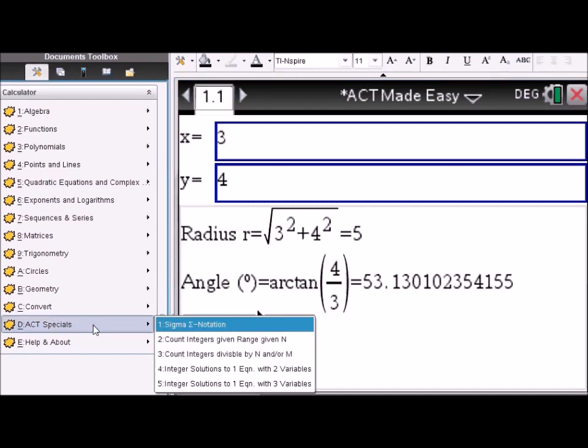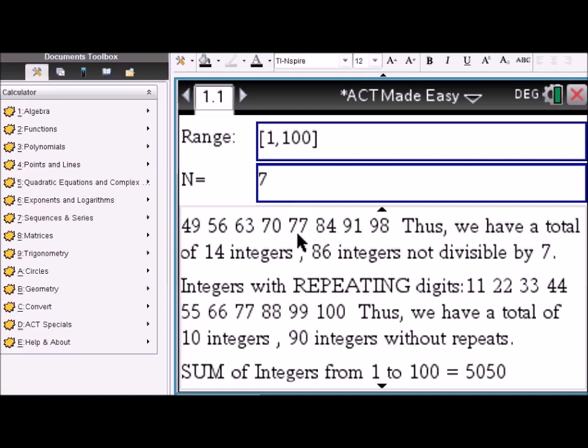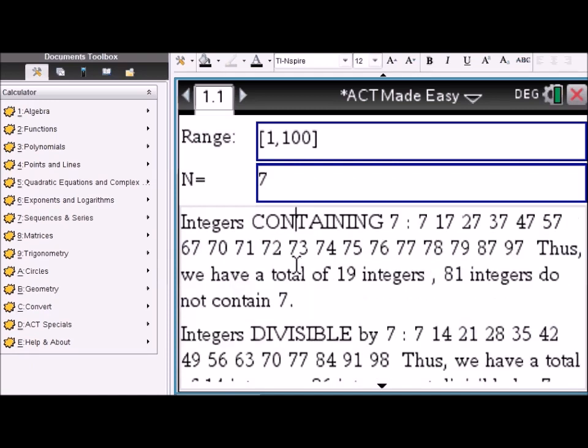Okay. Then here are some ACT specials. Say you have to find or count the numbers, integers, given a range. Let's say the range is 1 through 100, and say your magic number is 7. Watch what we have here for you.